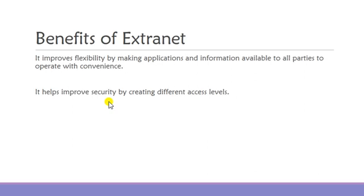There are also several issues with extranet. The first is that extranet is vulnerable to security breaches because it gives outsiders access to the internal database. Since external members use the internet to connect to the internal server, they are vulnerable to attacks. Also, extranet comes with a high cost of maintenance, as the organization must maintain both the internal server and the internet connection.